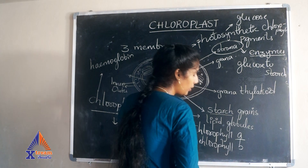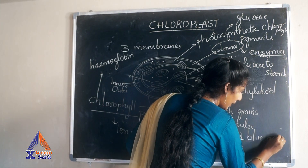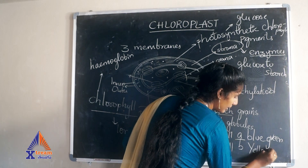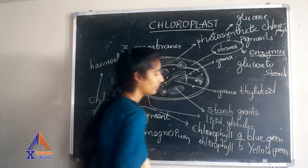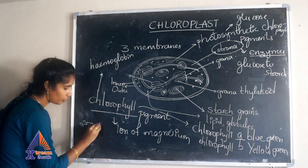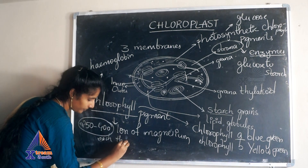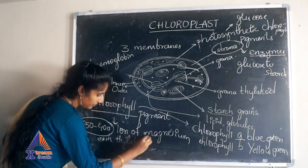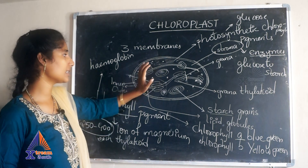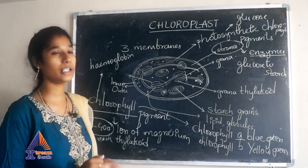Chlorophyll A produces a blue-green color. Chlorophyll B produces a yellow-green color. Around 250 to 400 pigments are present in each thylakoid, and they are helpful for photosynthesis. The chlorophyll pigments in the chloroplast are essential for the photosynthesis reaction.